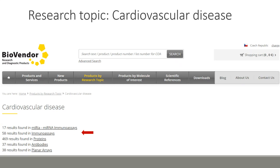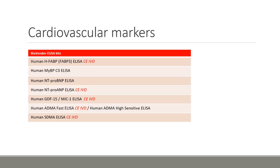Cardiovascular markers is a really very extensive topic. On our product list there are microRNA assays, antibodies, proteins, planar arrays, and 58 ELISA kits. I have selected only a few of them for today's webinar. Specifically, I am going to focus in particular on CE-IVD assays, namely heart fatty acid binding protein, myosin binding protein, anti-pro-ANP, anti-pro-BNP, GDF-15, and asymmetric and symmetric dimethylarginine assays.